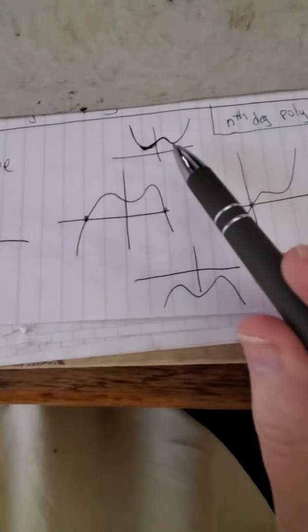Let's consider for a second a fourth-degree polynomial. It could look like this, it could look like this, it could look like this. These are all different possibilities of what the graph could look like.